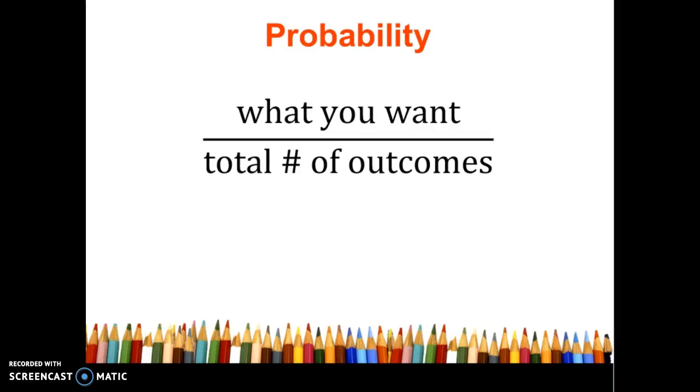So first we have a definition of probability. This isn't an actual definition but one way of thinking of it is what you want divided by the total number of outcomes. It's always what you want on top of your fraction and then on bottom is the total number of possibilities that you could have.